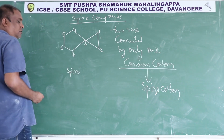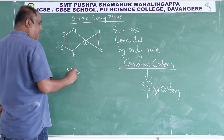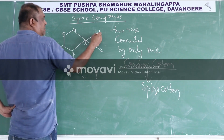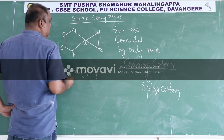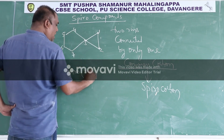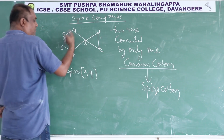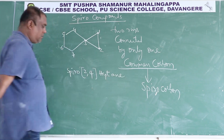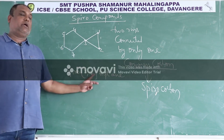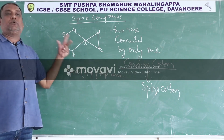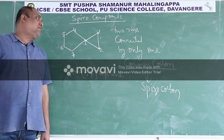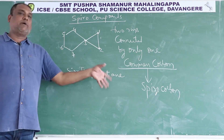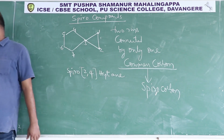The name starts with the prefix spiro, followed by a bracket containing the number of carbons in each ring (excluding the spirocarbon), from smaller to larger. For example, if one ring has 2 carbons and the other has 4, and total carbons are 7, the root word is hept, and the IUPAC name is spiro[2.4]heptane. This completes the nomenclature of spiro compounds, which will be continued with further examples.